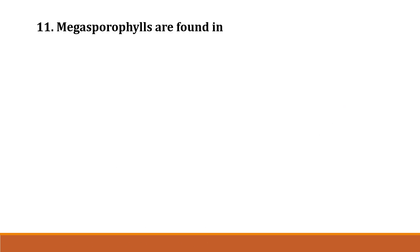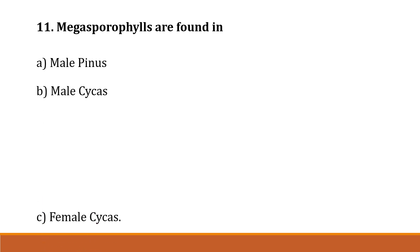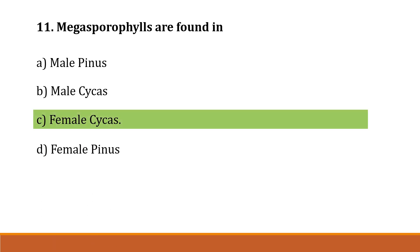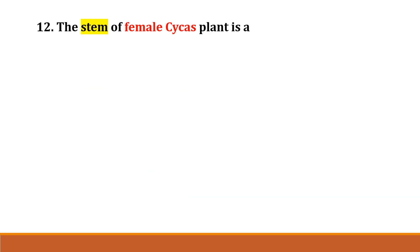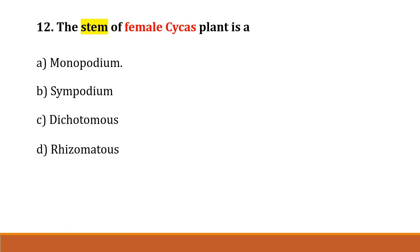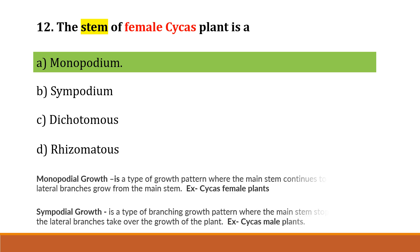Question number 11: Megasporophylls are found in Option A: male Pinus, Option B: male Cycas, Option C: female Cycas, Option D: female Cycas. The correct answer is Option C, female Cycas. Question number 12: The stem of the female Cycas plant is Option A: monopodial, Option B: sympodial, Option C: dichotomous, Option D: rhizomatous. The correct answer is Option A, monopodial.